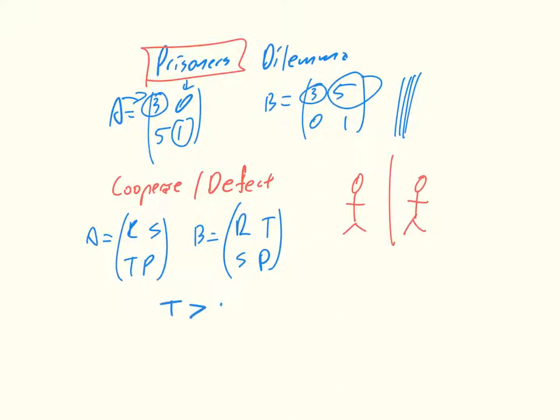So T is strictly greater than R, strictly greater than P, strictly greater than S, and that 2R is strictly greater than T plus S.